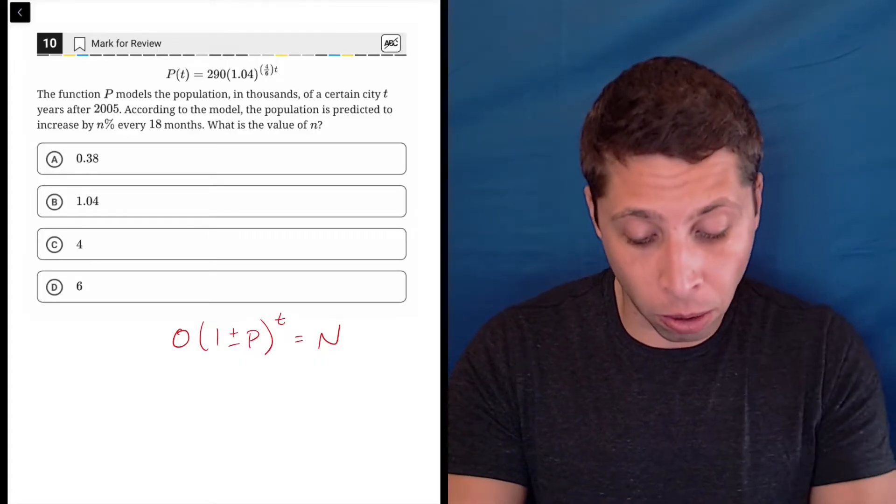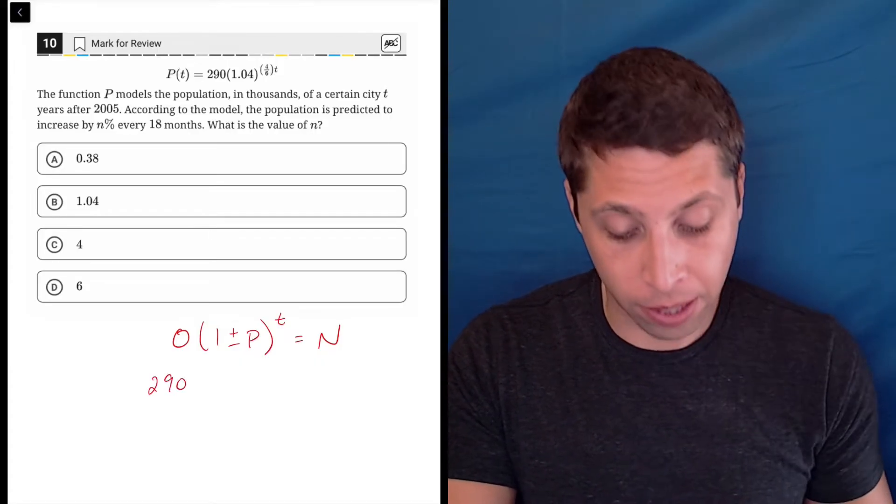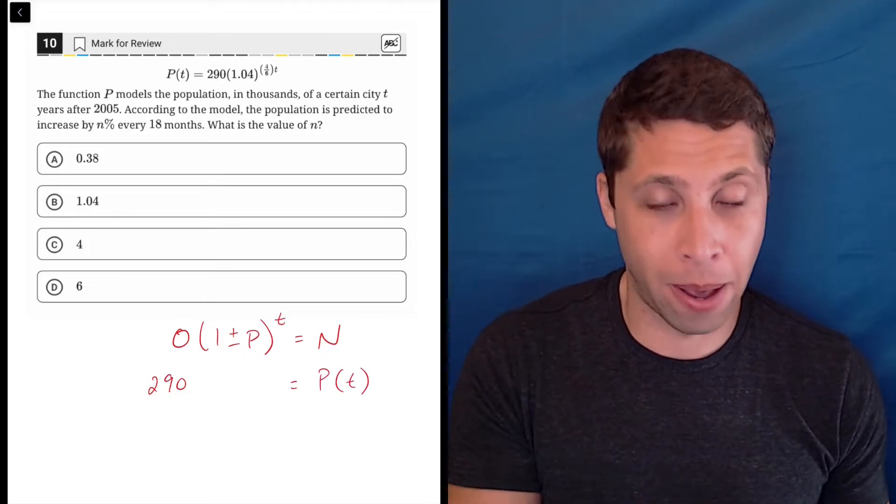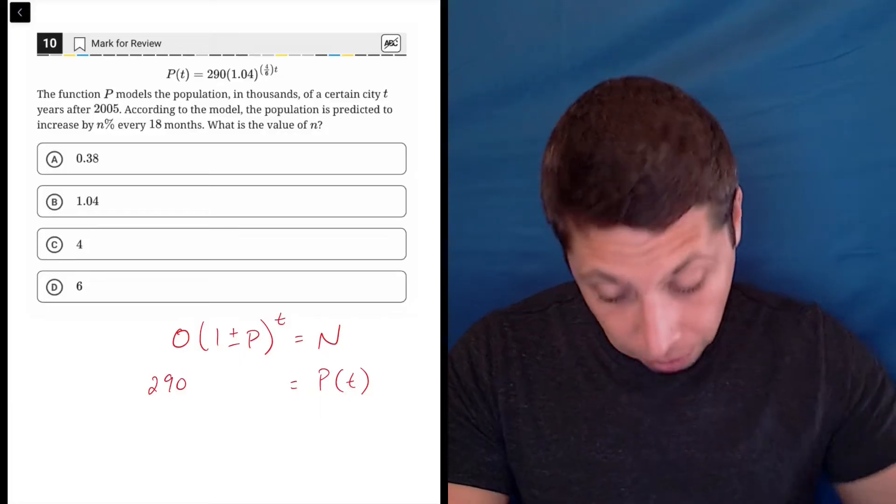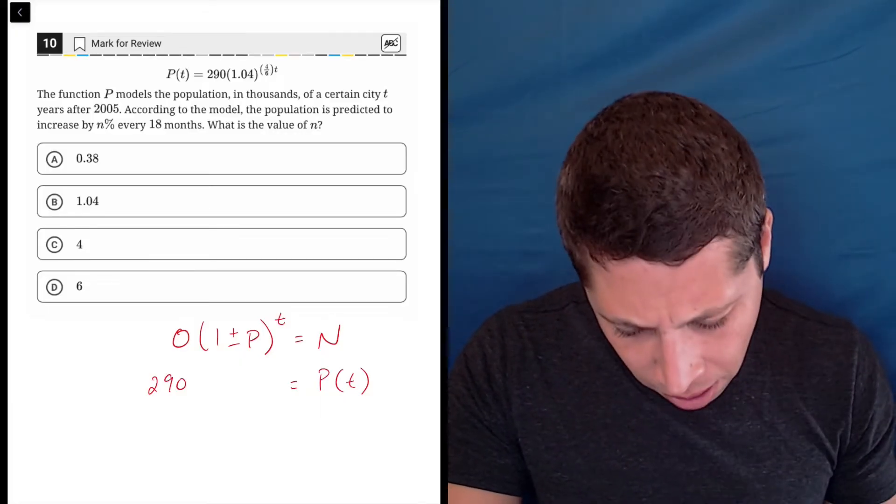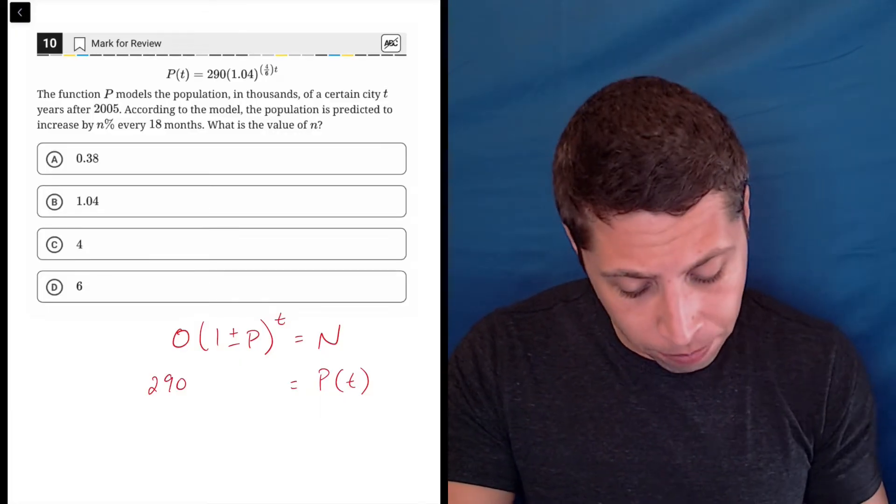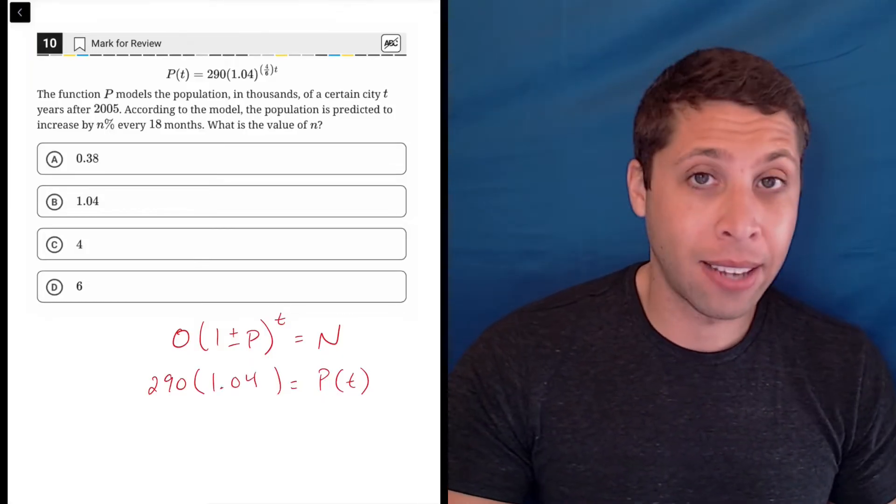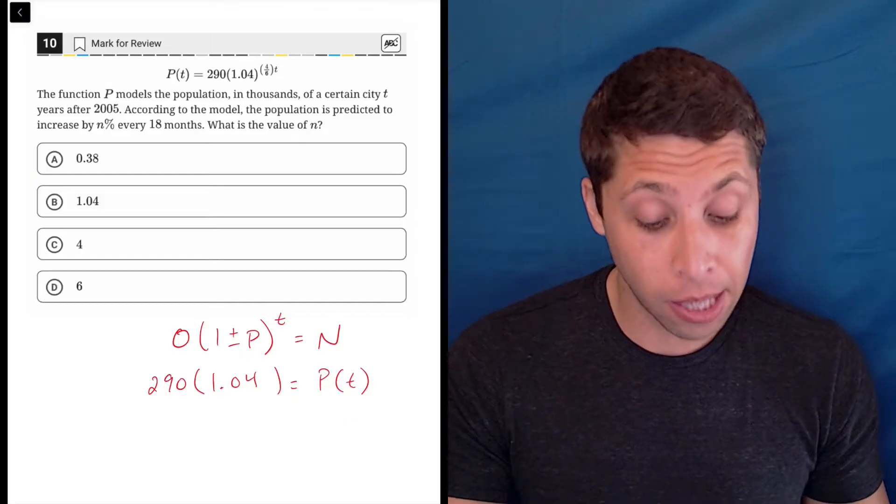So what's going on here? Our original amount would be the 290, so that fits in nicely. The new, they're putting it in the front, but P of T is the new amount, so that's okay. That's the amount of population that exists after a certain amount of time. So then what's the deal here? We've got 1.04 as our one, in this case, plus P.